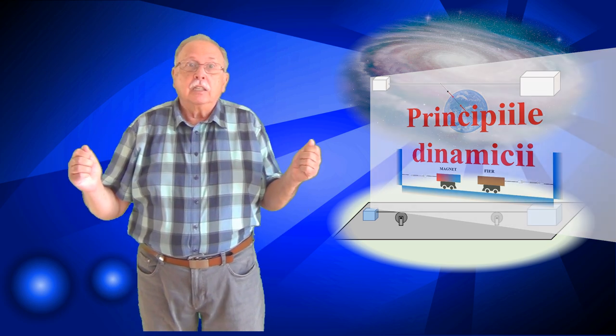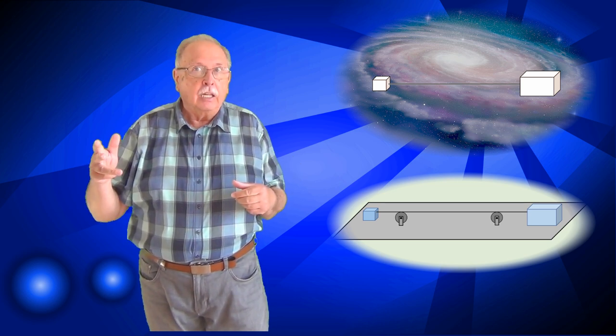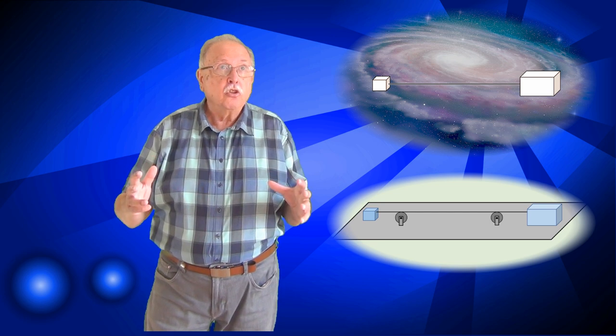Firul începe să tragă de corpuri, de amândouă, evident. N-ar putea să fie întins dacă n-ar avea reacțiuni la ambele capete. Dacă l-am tăia lângă unul dintre corpuri, n-ar mai trage nici de celălalt corp. Mai mult decât atât, datorită principiului acțiunilor reciproce, firul acționează asupra ambelor corpuri cu aceeași forță, forță pe care în fizică o numim tensiunea din fir.